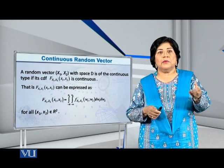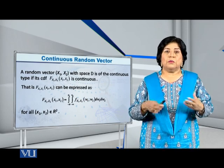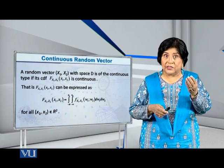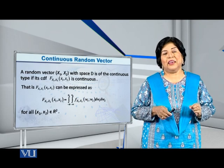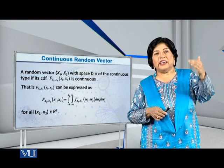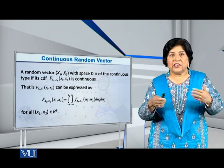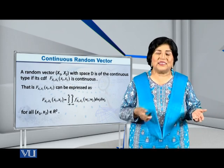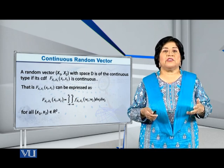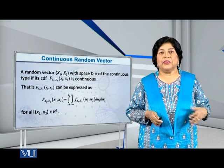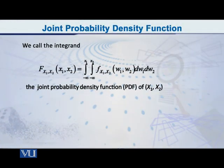When we apply limits, as in the case of a single variable, we have to go to x1 as far as the random variable x1 is concerned, and we have to go to x2 as far as the random variable x2 is concerned. This is the definition of the joint cumulative distribution function for the continuous case.